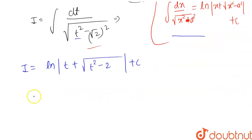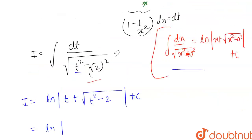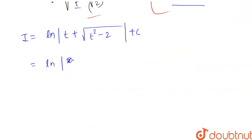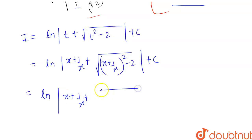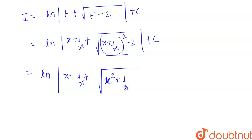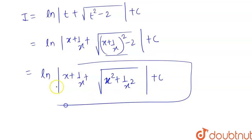Now let's substitute back the value of t, where t = x + 1/x. So the answer is ln of (x + 1/x) + under root of (x + 1/x)² - 2 + C, which equals ln of (x + 1/x) + under root of (x² + 1/x²) + C. This is the final answer for the above integral.